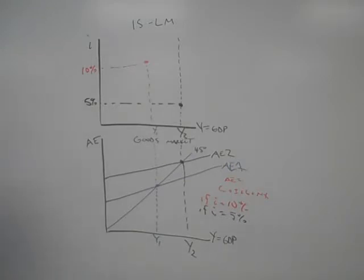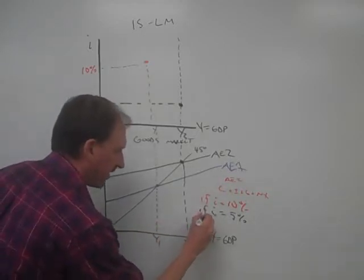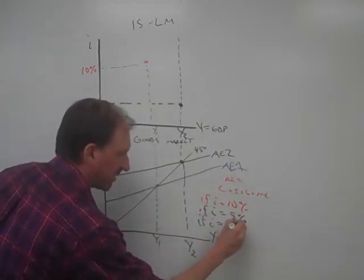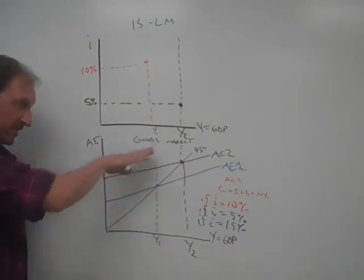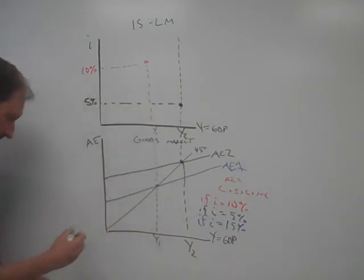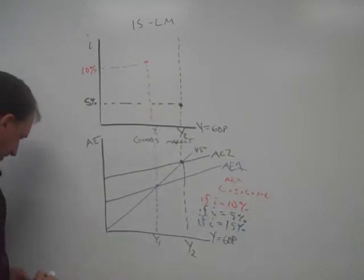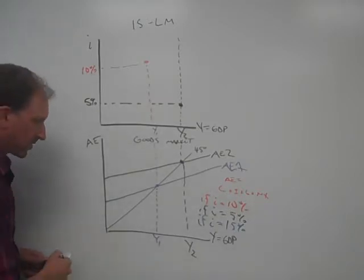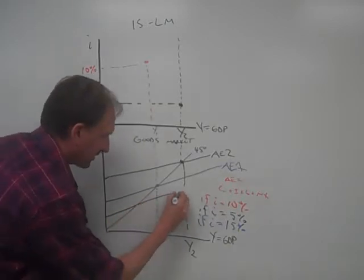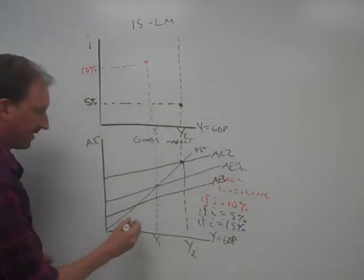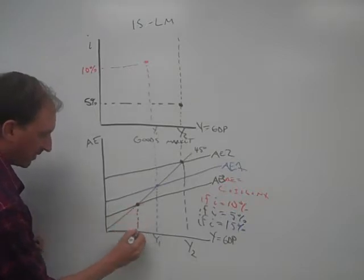I'll do one more just to give you a couple of data points to look at. So if I equals 15%, well, now interest rates are really high. That's going to hurt investment, which is going to pull down this stack. That means that AE is going to be really low, and that's going to move to AE3. Here's our point of equilibrium.